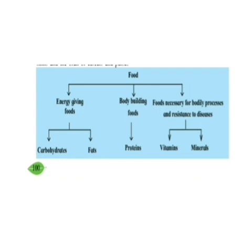Nutrition, Nourishment, and Malnutrition: For our body to be well-nourished, we must get all the different food constituents in the right quantities. If a person's diet lacks some constituents over a long period of time, that person does not get proper nourishment. Malnutrition has serious consequences for a person's health. For example, if a person does not get enough carbohydrates and proteins, their growth is stunted, they feel constantly tired, and they cannot cope with their studies, games, or other tasks. Deficiencies of vitamins or minerals cause specific disorders.